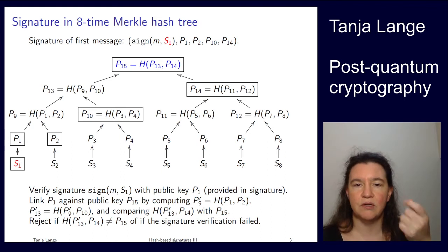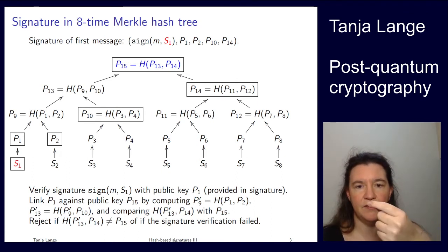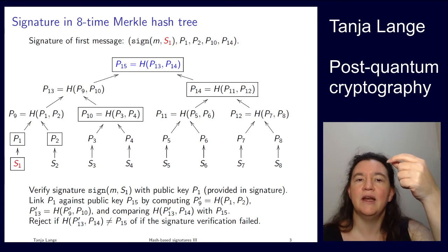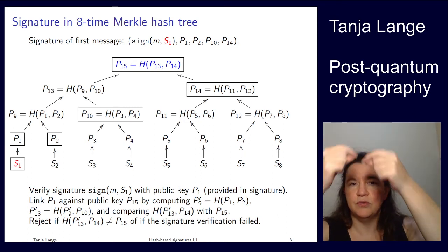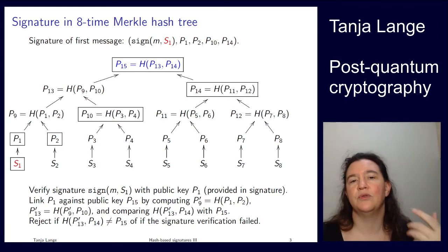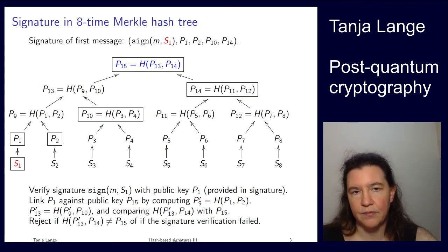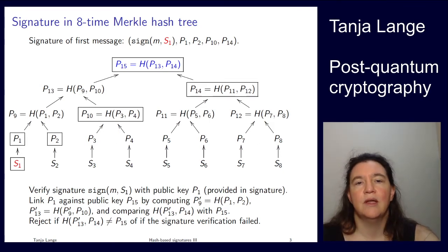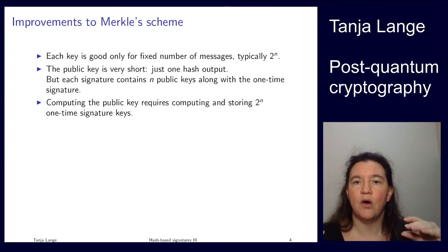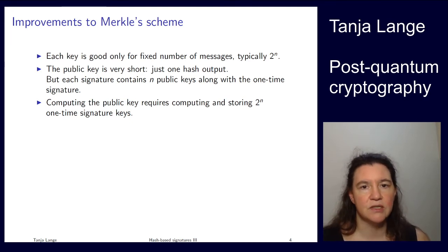For the sixth message, you release something related to S6 and P6, and must provide all the siblings along the path: P5 so people can compute P11, P12 so people can compute P14, and P13 to then compute P15. In general, for the path from a leaf to the root, the signature must include all the respective siblings. You can generalize from eight-time signatures to any power of two. With 2^n leaves, all one-time signatures are captured in a single hash value — the root — making the public key very short.